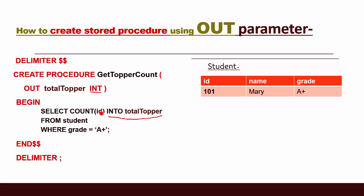Whenever you are using an OUT parameter, you need to take the result out using INTO followed by the OUT parameter name — total_topper. After this, we can save this stored procedure in our database, and whenever we want to execute it, we use the CALL statement followed by the procedure name and the output parameter.